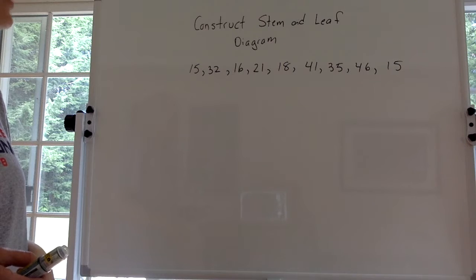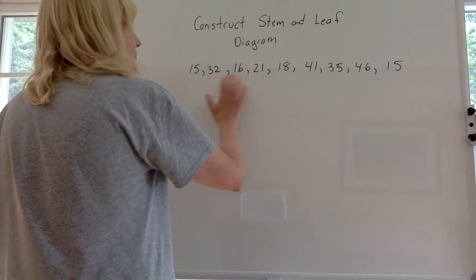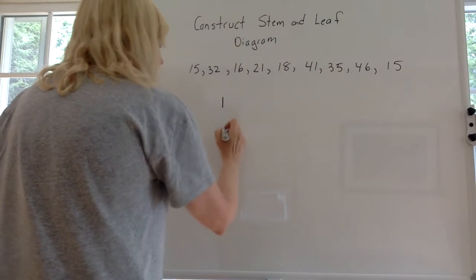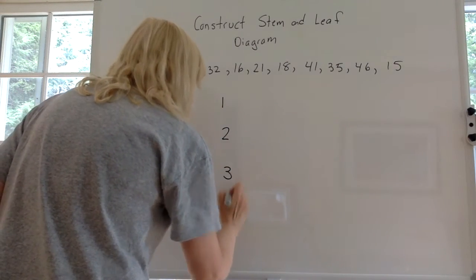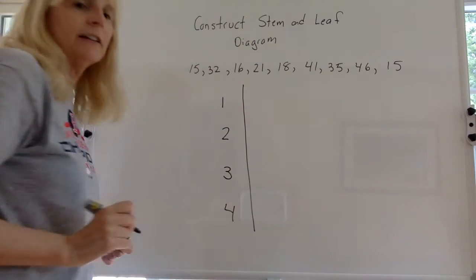First we're going to list all the stems that we have. If you look we have some numbers in the teens, the 20s, the 30s, and the 40s. So we have 10s, 20s, 30s, 40s. Then you draw a line like that, okay?